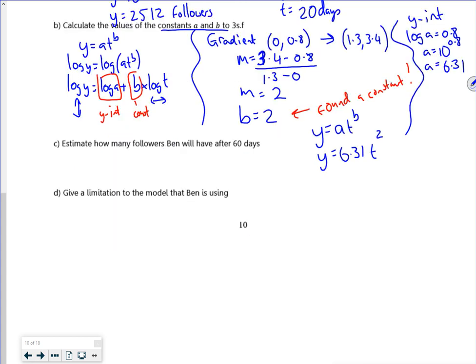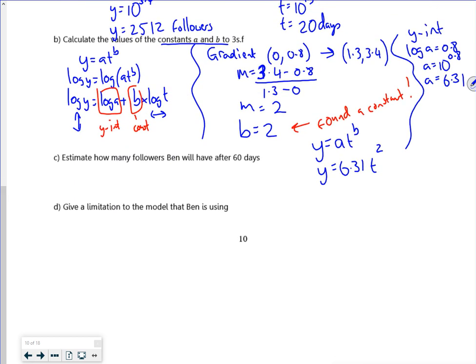So it says estimate how many followers we'll have after 60 days. So if I use that equation, 6.31 times by t which is 60, that'll give a y value of roughly 22714.